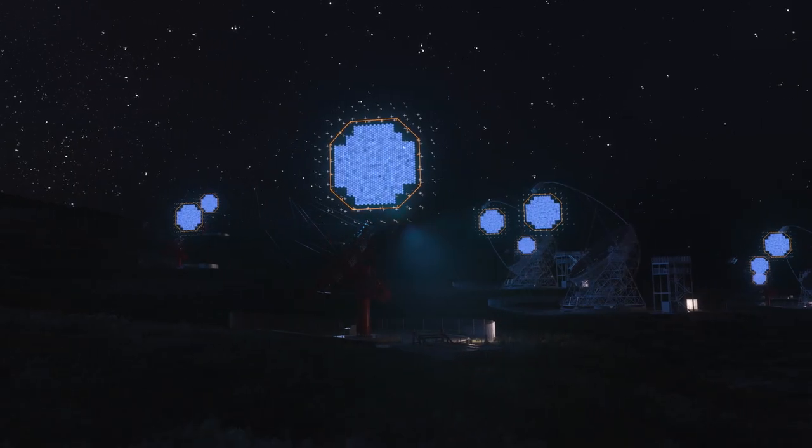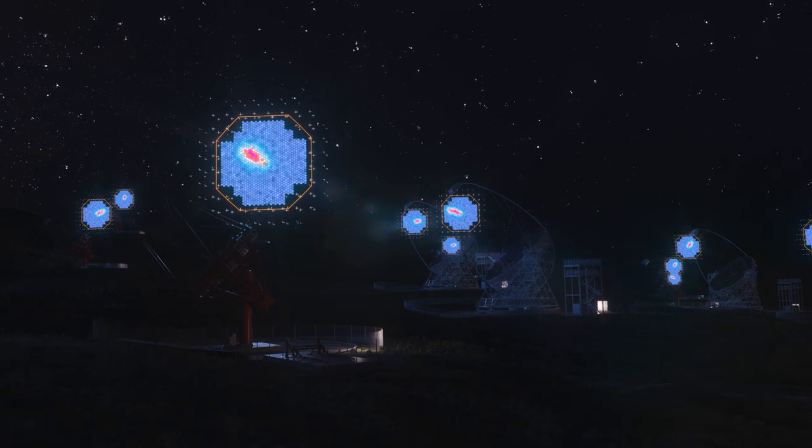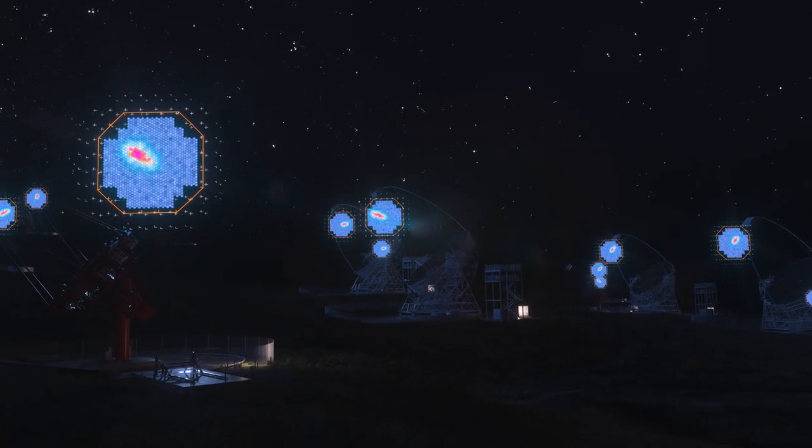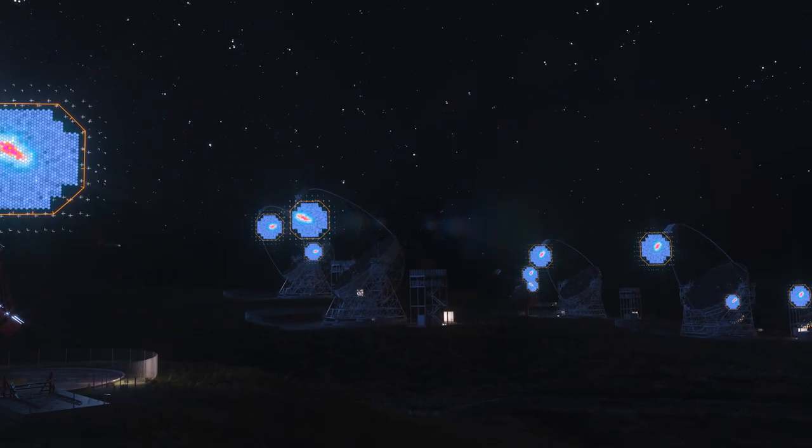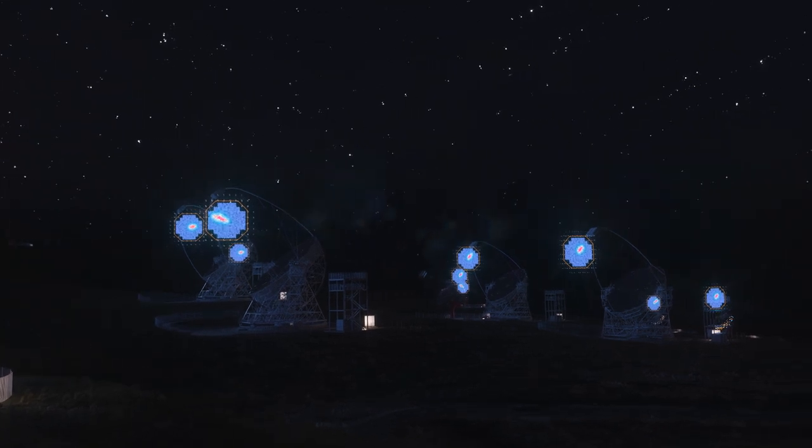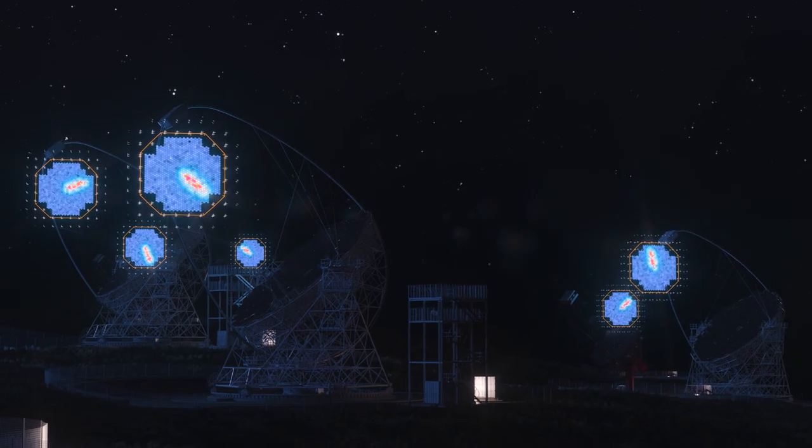Data centers will store and process the information, so scientists can work with it. The telescopes are positioned to increase our chances of detecting Cherenkov light. More telescopes gives us more information.